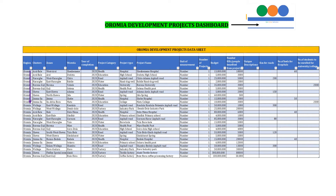Let's come to the data entry. The first field is the region — in this case, Oromia. Then the cluster, then zones, then woreda, then year of completion of that project, then project category, project type, and project name. For example, the project category is the bigger categorization — for example, Health. The project type could be Hospital or Health Post. And the project name could be a specific project — for example, Shashamani Hospital.